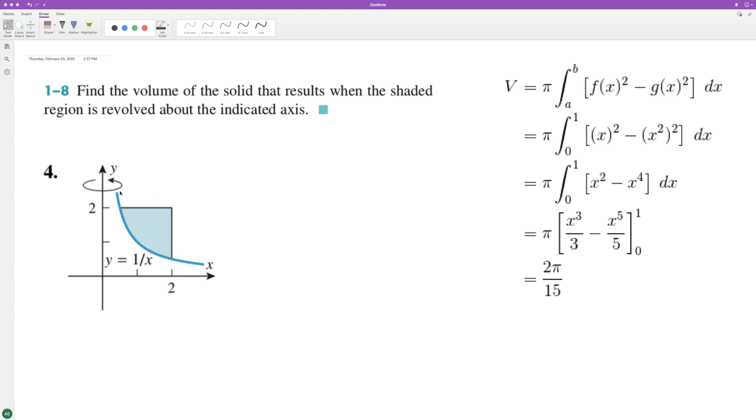The volume that's created by rotating this around the y-axis. So what we need to actually do is resolve this for x. That's simple enough - we just multiply x and y together and then divide one by y, so we get one over y.